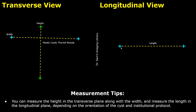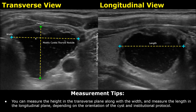These images show a mostly cystic thyroid nodule. It has some solid areas, but is mostly cystic. This structure is not round in shape. The first image is in the transverse plane. For some lesions, such as this one, you can measure the height in the transverse plane along with the width. This is because in the transverse plane, you might see a better orientation of the lesion, and the height can then be more accurately measured.